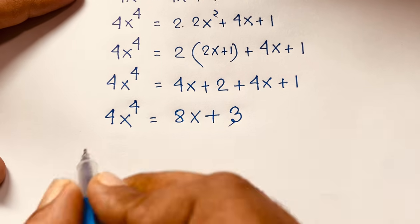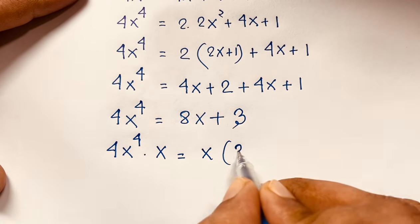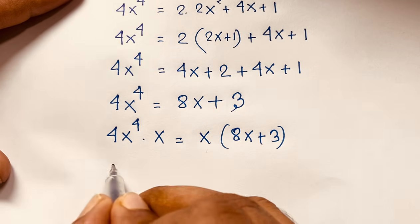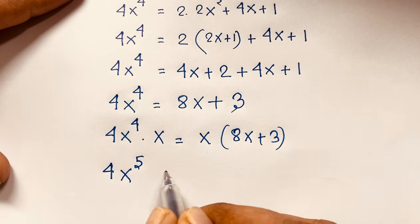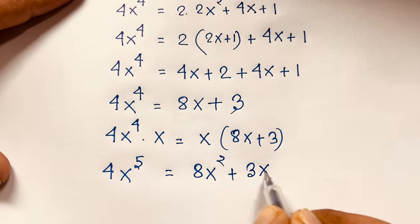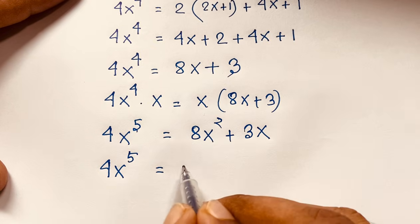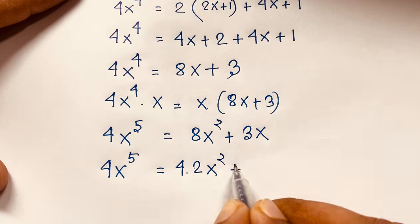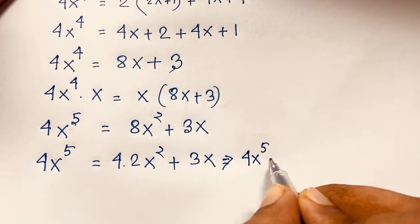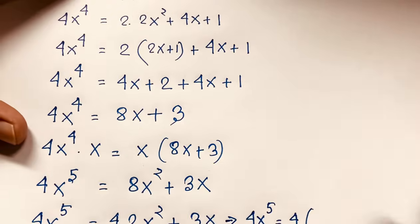Our target is x to the power 5. Multiplying both sides of 4x⁴ = 8x + 3 by x: 4x⁵ = 8x² + 3x. Substituting 2x² = 2x + 1, so 4x² = 2(2x+1) = 4x + 2: 4x⁵ = (4x + 2) + 3x = ... let me compute this carefully.